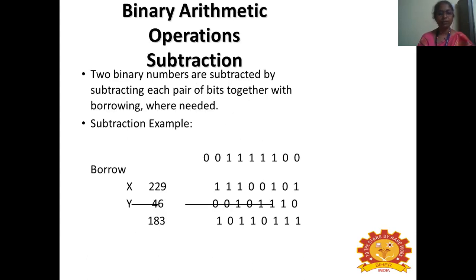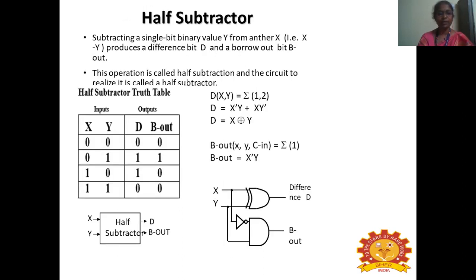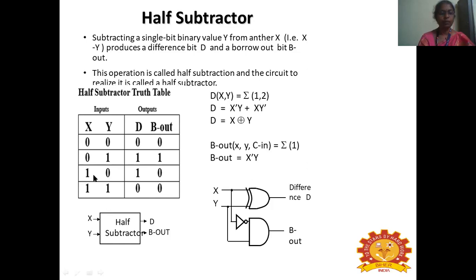Binary arithmetic subtraction example: 229 minus 46 equals 186. Binary subtraction can be done similarly. Half subtractor: subtracting a single-bit binary value Y from X (X minus Y), where the difference output is D and the borrow output is B. With two input variables there are four combinations and two output variables. When 0 minus 0: difference=0, borrow=0.